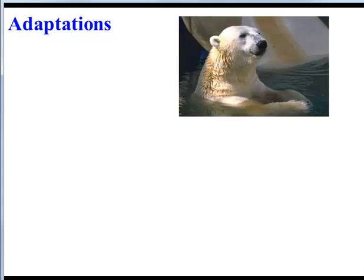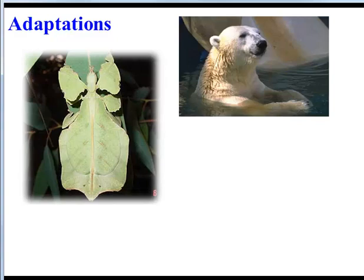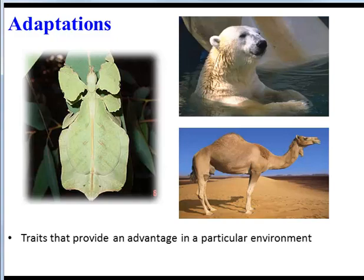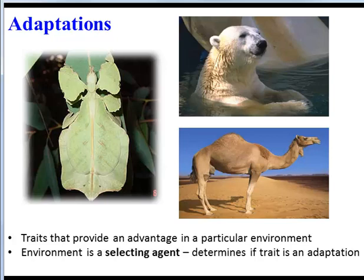Some of those variations can prove to be adaptations. For example, a polar bear's thick fur, this insect's body color and shape which camouflages it against other leaves, and the color and the hump of a camel in a desert — all traits that provide an advantage in a particular environment. Note the role of the environment here: the polar bear's thick fur is only an adaptation in its cold environment. If we were to put this polar bear in the desert, that thick fur is no longer an adaptation — it's actually a disadvantage. So the environment acts as a selecting agent, determining whether a trait is an adaptation, neutral, or harmful.